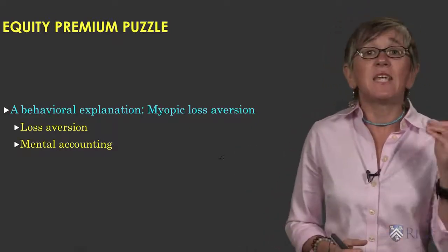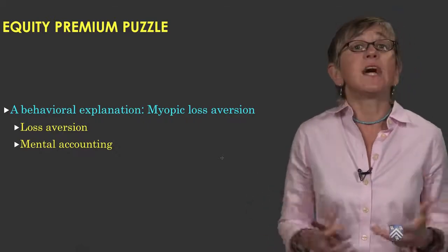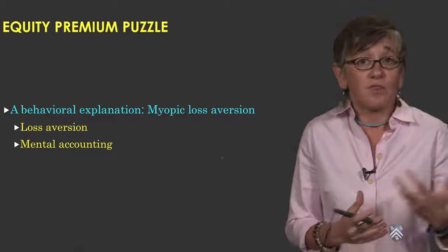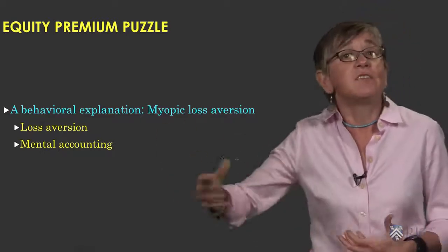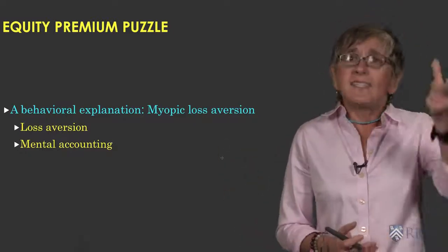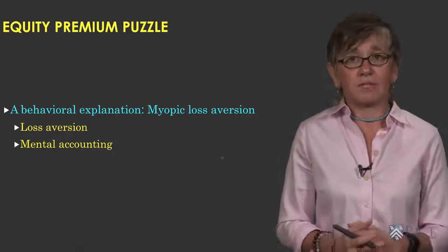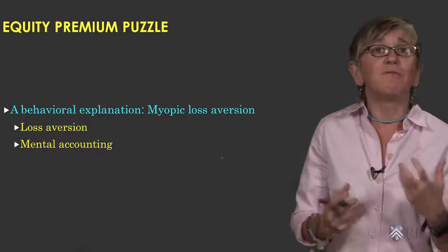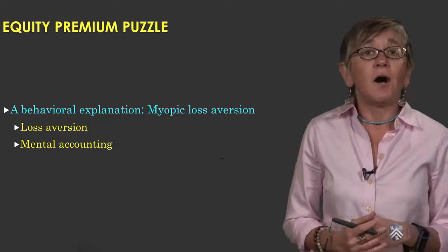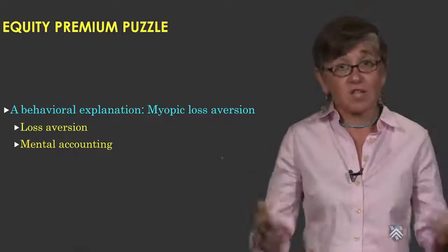Myopic loss aversion is based on two concepts. The first is loss aversion. Recall that loss aversion refers to people's tendency to be more sensitive to losses or reductions than to increases or gains — we saw this in the previous lectures as prospect theory. The second component of myopic loss aversion is mental accounting. Recall that mental accounting refers to the implicit methods that we use to organize in our minds, for example in evaluating financial outcomes like transactions, investments, or gambles.